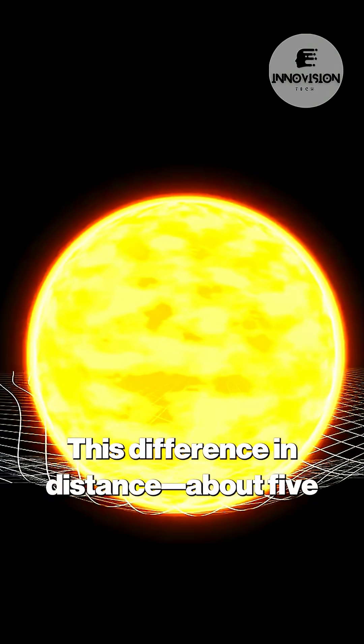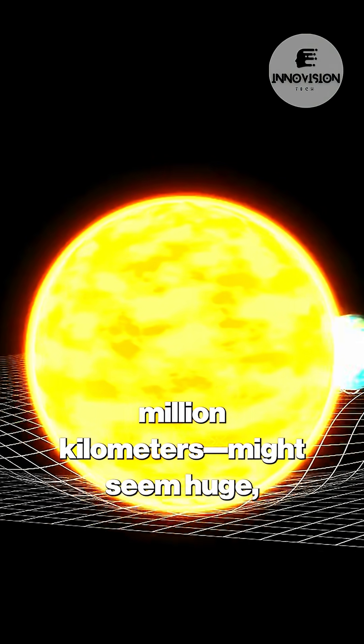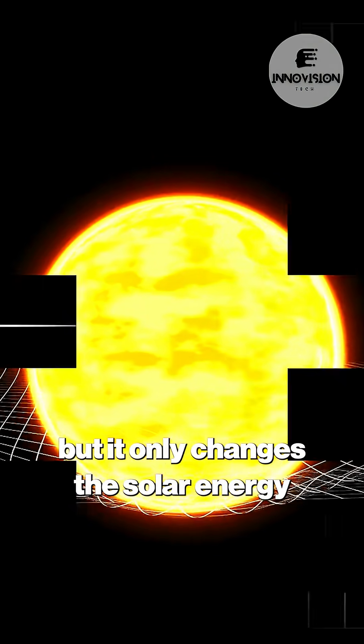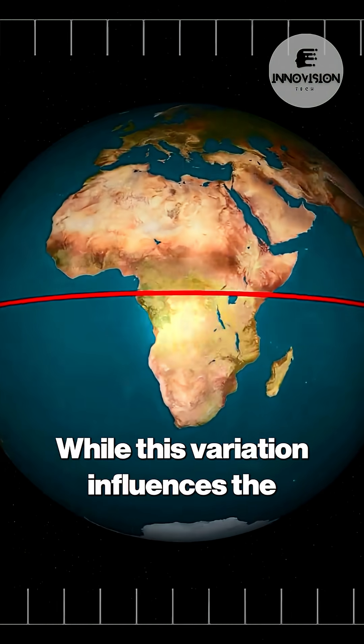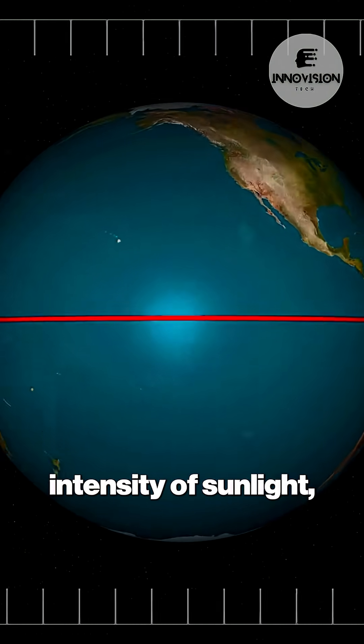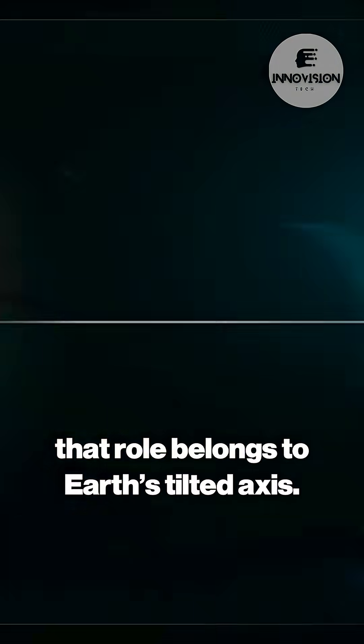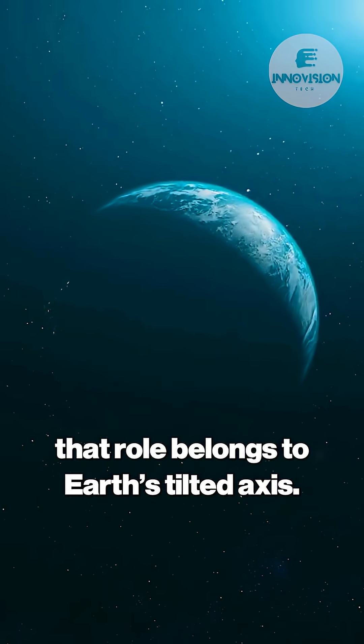This difference in distance, about 5 million kilometers, might seem huge, but it only changes the solar energy Earth receives by roughly 7%. While this variation influences the intensity of sunlight, it's not the main driver of our seasons. That role belongs to Earth's tilted axis.